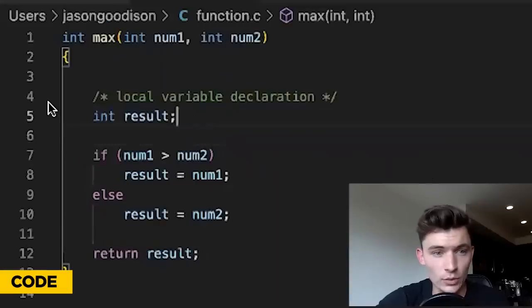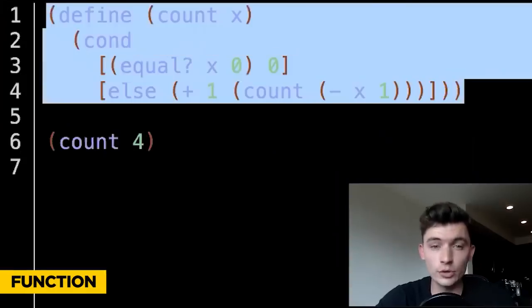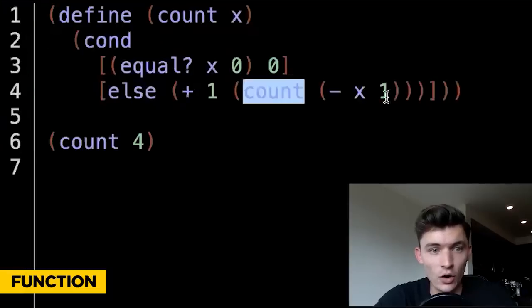Code is just instructions that execute line by line. Functions are just self-contained, reusable chunks of code. A function is recursive if it calls itself.